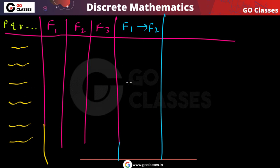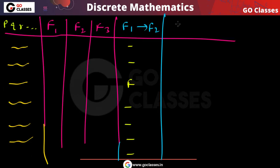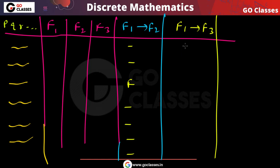Falsifiable means there is at least one row in which it is false. Next, F1 implies F3 is a tautology — meaning true in every row, true, true, true, and so on. So this is a tautology.